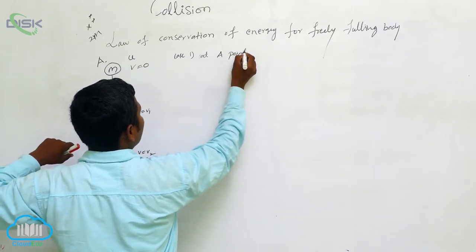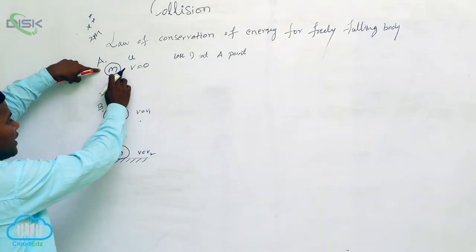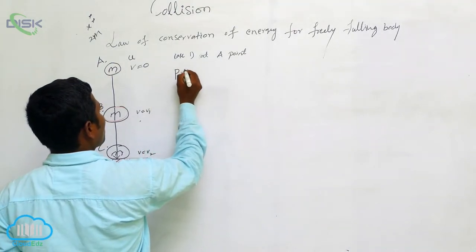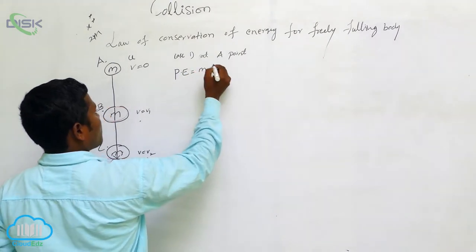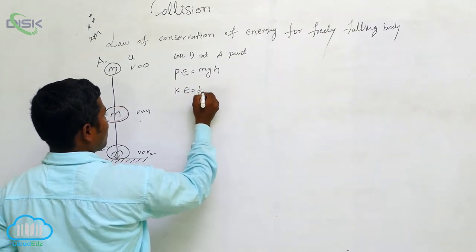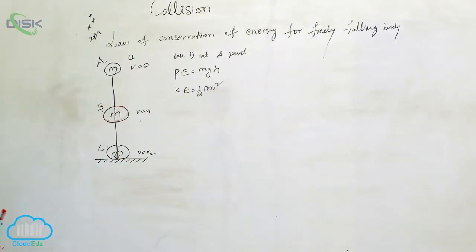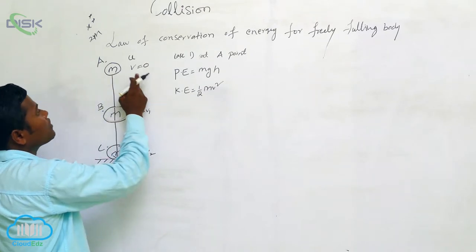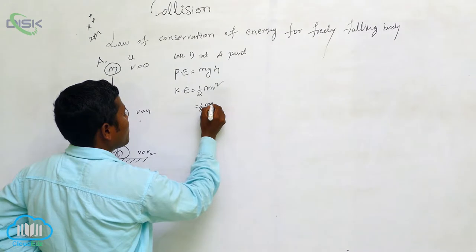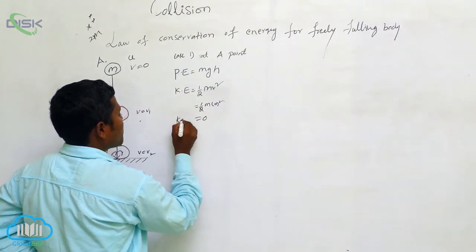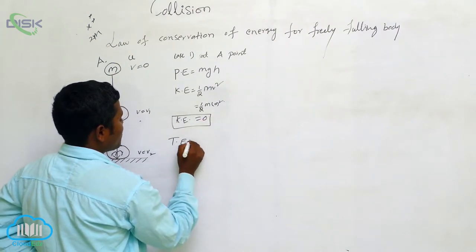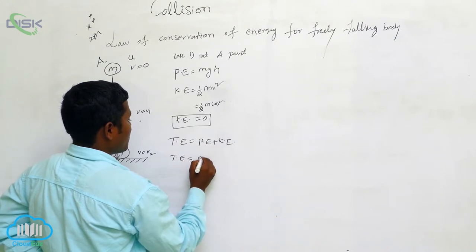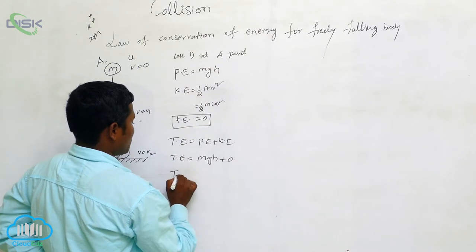Case one: at point A. At this point, two energies exist — potential energy (PE) with formula mgh, and kinetic energy (KE) with formula half mv squared. At point A, the velocity is zero, so KE equals half m times zero squared, which equals zero. Therefore the total energy equals PE plus KE, which is mgh plus zero, giving total energy equal to mgh.